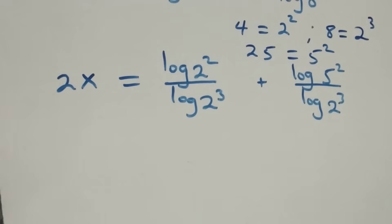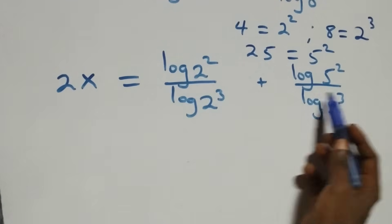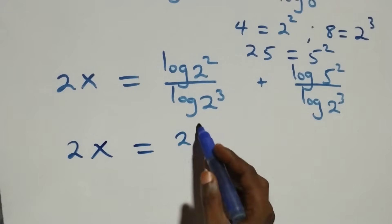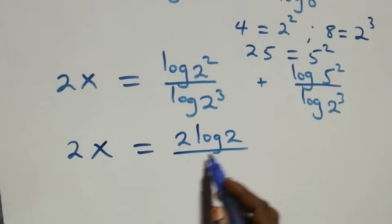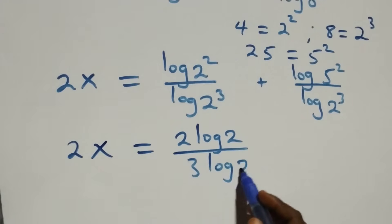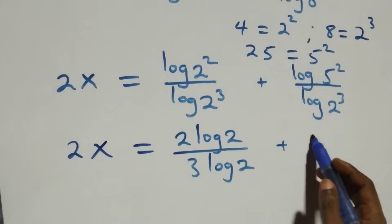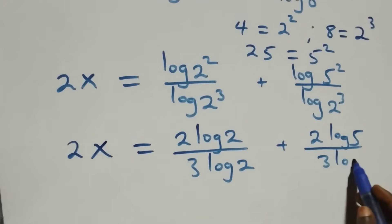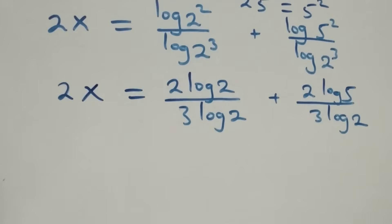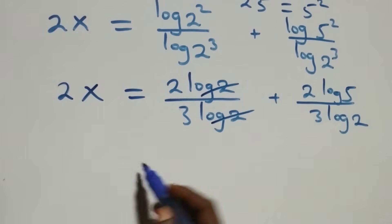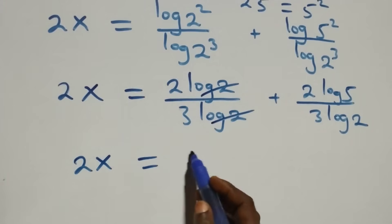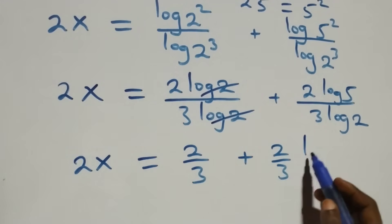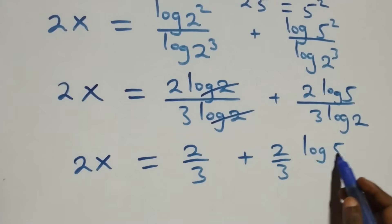Here we apply the power rule of logarithms again. The powers come down: 2x equals 2 log 2 over 3 log 2, plus 2 log 5 over 3 log 2. Then log 2 cancels with each other, leaving 2x equals 2 over 3 plus 2 times log 5 over log 2.